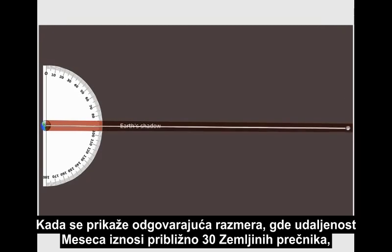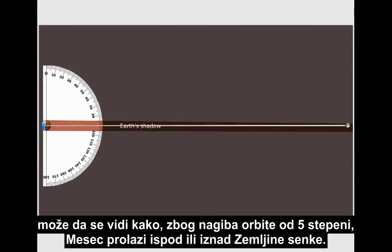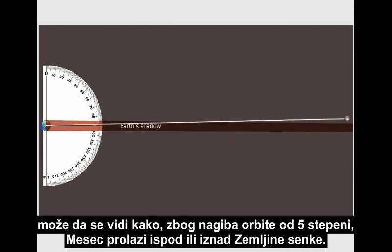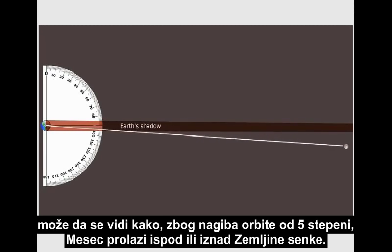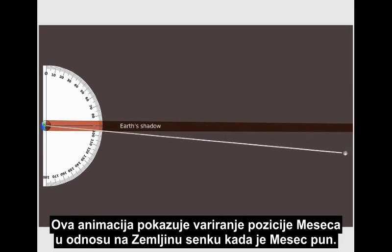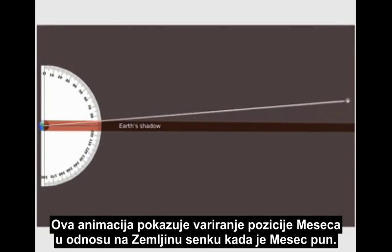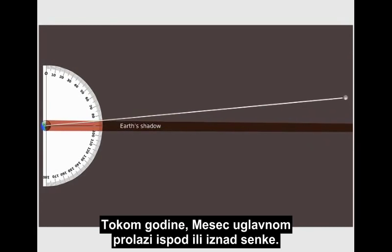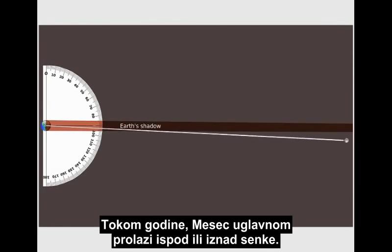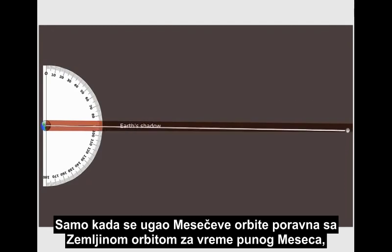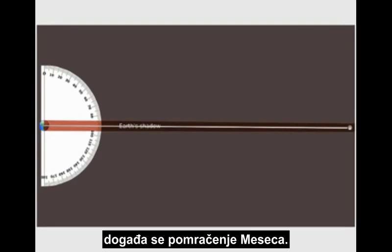When shown to proper scale, with the Moon about 30 Earth diameters away, you can see how the orbital tilt of 5 degrees can cause the Moon to pass below or above Earth's shadow. This animation shows the variation of the Moon's position in relation to the Earth's shadow when it reaches full Moon each month. Most months it passes above or below the shadow. Only when the angle of the Moon's orbit is aligned with the Earth's orbit at full Moon does a lunar eclipse occur.